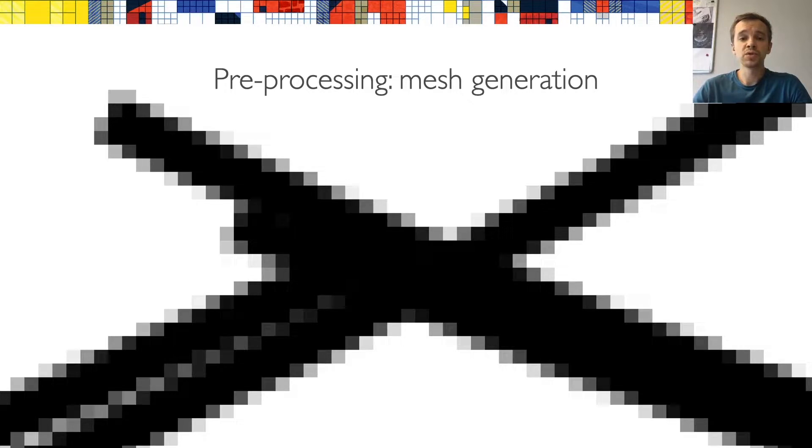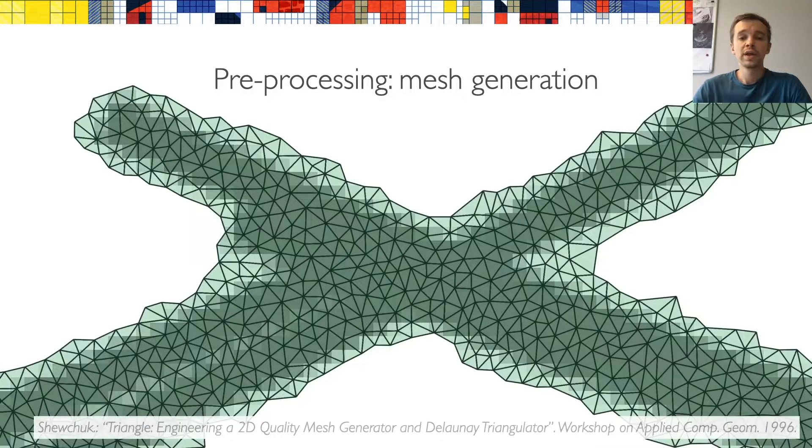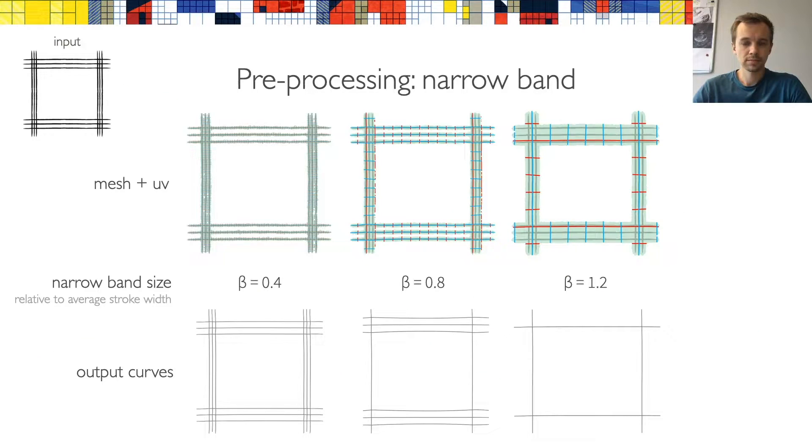An obvious choice here would be to simply use the black pixels, and indeed, that's what's been done, for instance, by Bessmeltsev and Solomon. We have instead decided to work on a triangle mesh with triangle size proportional to the average stroke width. This allows us to decouple the resolution of the drawing from the resolution of the discretization. Similarly to Bessmeltsev and Solomon, we only discretize the narrow band around the black pixels, although we let the user to specify the width of this band according to her desired level of simplification.